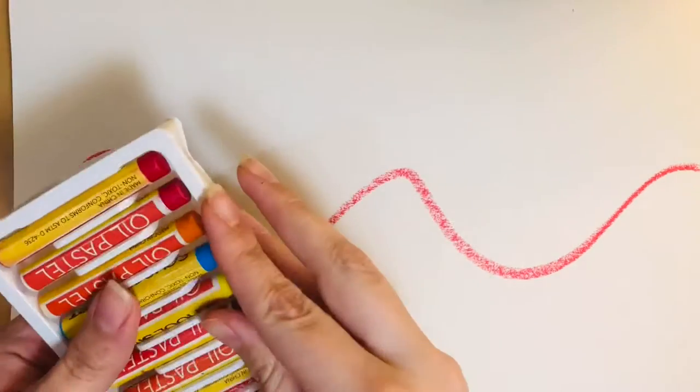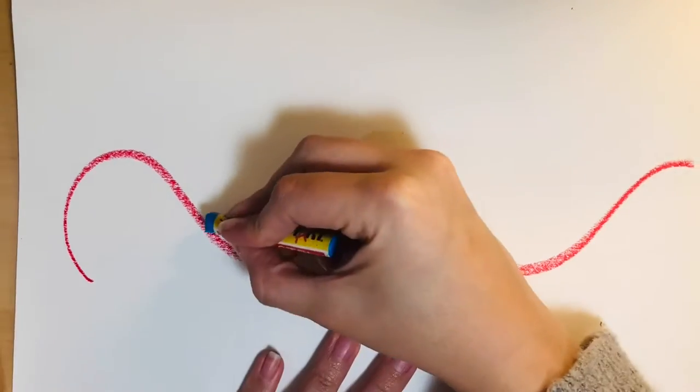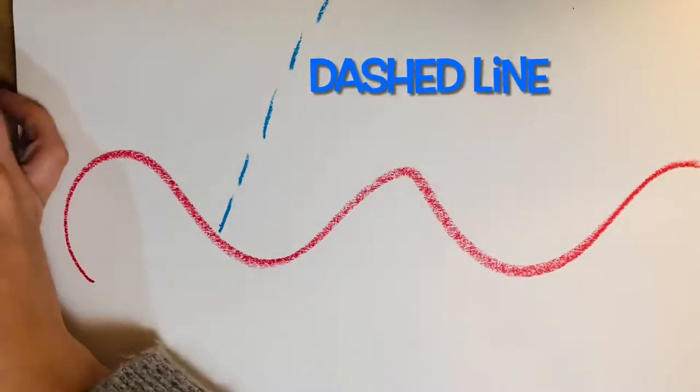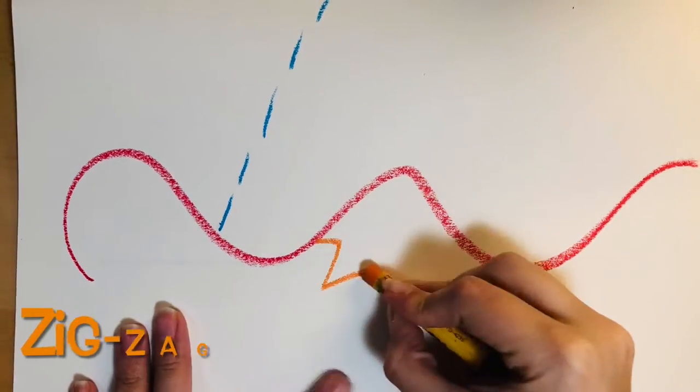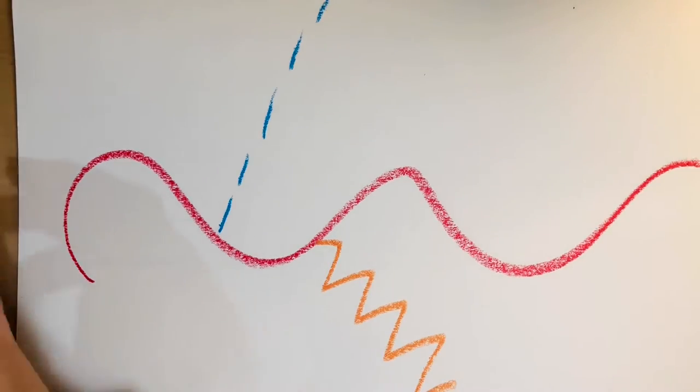First we want to draw our lines in different colors, meaning that each time we draw a new line we change our color. We see my wavy line in red, my dash line in blue, and my zigzag line in orange.